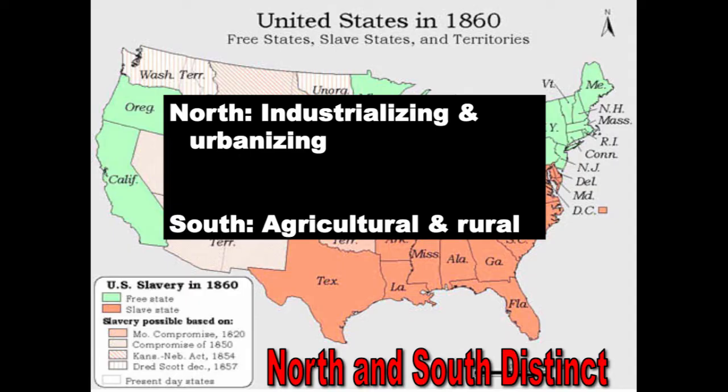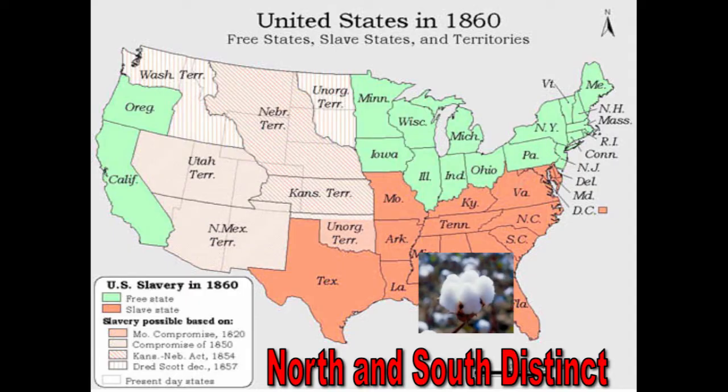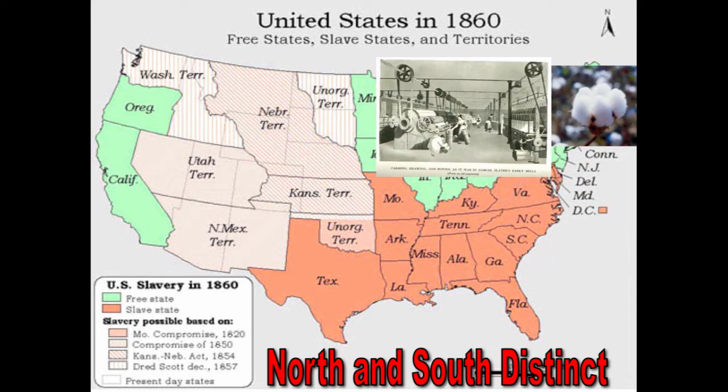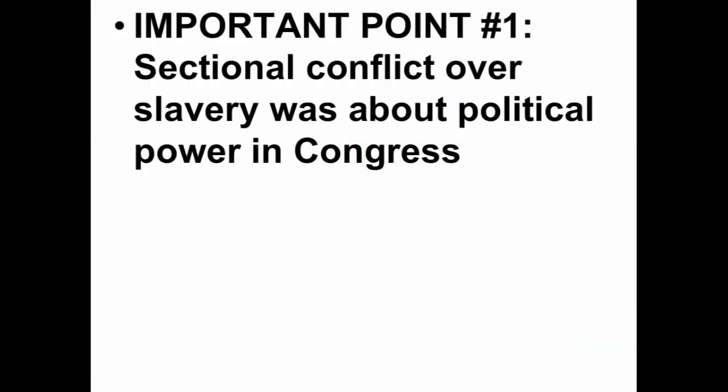However, it is important to note that Southern cotton helped fuel the market revolution in the North, because this cotton was not only going to England but also to the North, which helped develop northern manufacturing and the textile industry. An important point: sectional conflict over slavery was about political power in Congress. This was not an issue of the North being against slavery on moral or ethical grounds, and it's definitely not about the North trying to abolish slavery in the South.